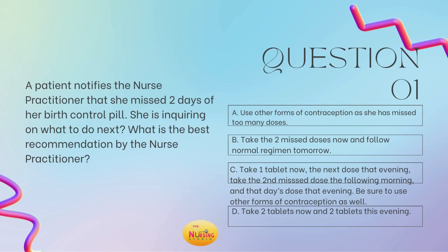Question number one states: a patient notifies the nurse practitioner that she missed two days of her birth control pills. She is inquiring on what to do next. What is the best recommendation by the nurse practitioner? Is it A, use other forms of contraception as she has missed too many doses? B, take the two missed doses now and follow a normal regimen tomorrow? C, take one tablet now, the next dose that evening, take the second missed dose the following morning, and then that day's dose that evening, and be sure to use other forms of contraception as well? Or D, take two tablets now and two tablets this evening? Take a moment and tell me what you have in the comments.